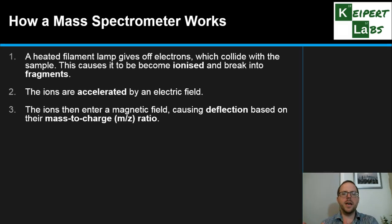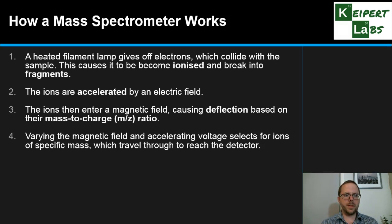Based on a ratio of their mass to their electric charge, they become deflected by the magnetic field. By varying the accelerating voltage and the strength of the magnetic field, we can select for particular ions to pass through the magnetic field and hit the detector while excluding others. By varying that, we can select for different sized chunks and pick up the signal.